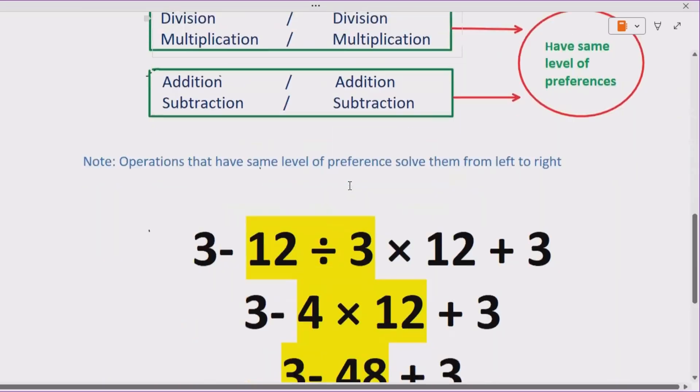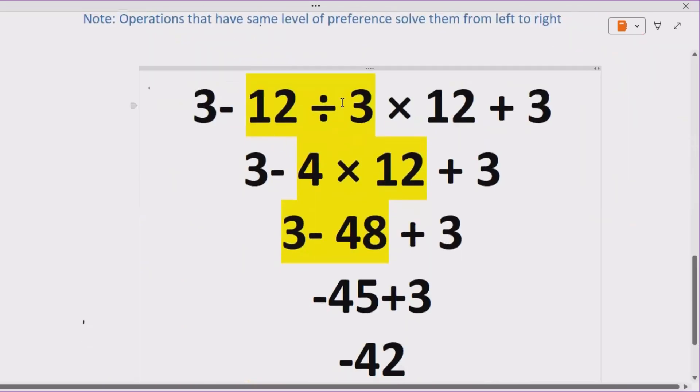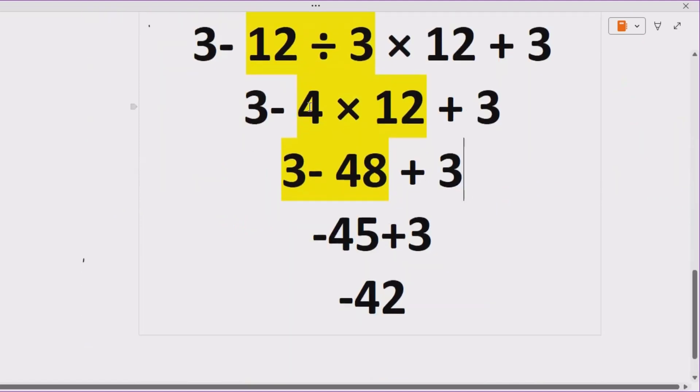or PEMDAS we have to actually do division, so 12 divided by 3 gives us 4. Now according to BODMAS or PEMDAS we have to multiply, so 4 into 12 gives us 48.